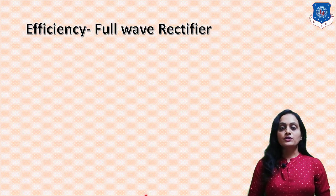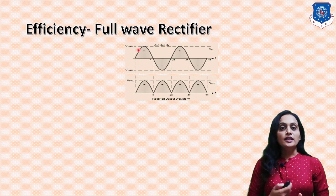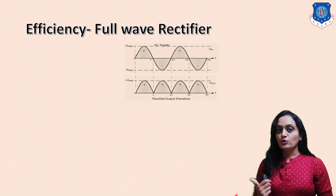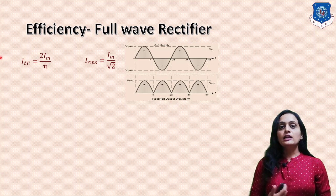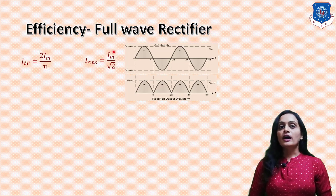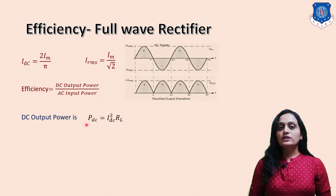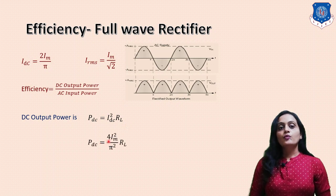Now we will find the efficiency for the full wave rectifier. The input is a sinusoidal signal and the output is pulsating DC as shown in the figure. For the full wave rectifier, IDC = 2IM/π and IRMS = IM/√2. Efficiency equals DC output power divided by AC input power. PDC = IDC² × RL, and putting the value of IDC gives PDC = 4IM²/π² × RL.